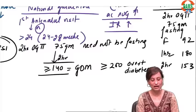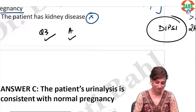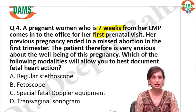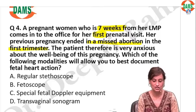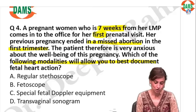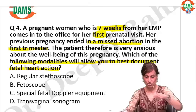If you have got question number 3 correct, put a tick; if you got the approach correct, put a tick too. Everybody ready for question number 4? Your patient is 7 weeks pregnant, come for her first antenatal visit. Her previous pregnancy was a missed abortion in the first trimester. The patient is very anxious about the well-being of the current pregnancy. Which modality will you use to best document fetal heart rate?